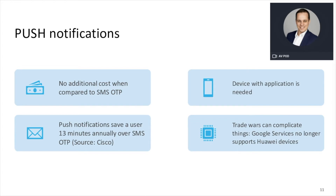Push notifications are bound to the software token approach, which we will focus on in today's presentation. This can be a standalone application or integrated into your existing mobile app. There is no additional cost to push compared to SMS — you send the notification through mobile operating systems at no cost to you as an operator. Research by Cisco shows that people really save time with push notifications — they are faster. Users are already used to push notifications from WhatsApp, Facebook, and everything, so push is becoming as widely accepted as SMS.